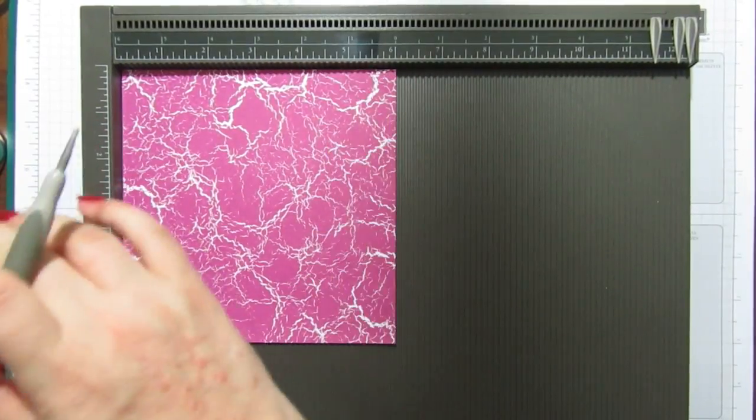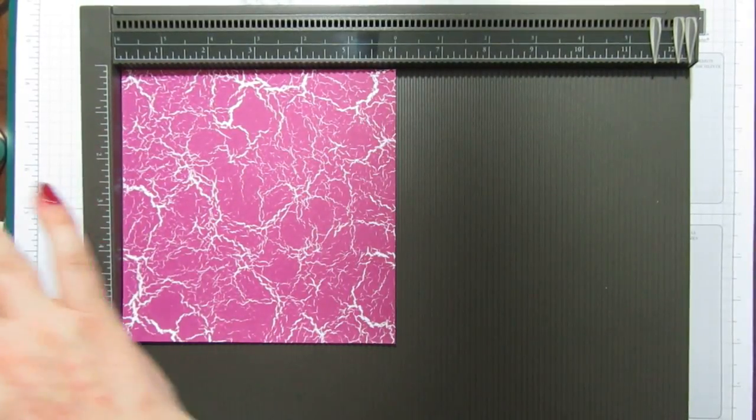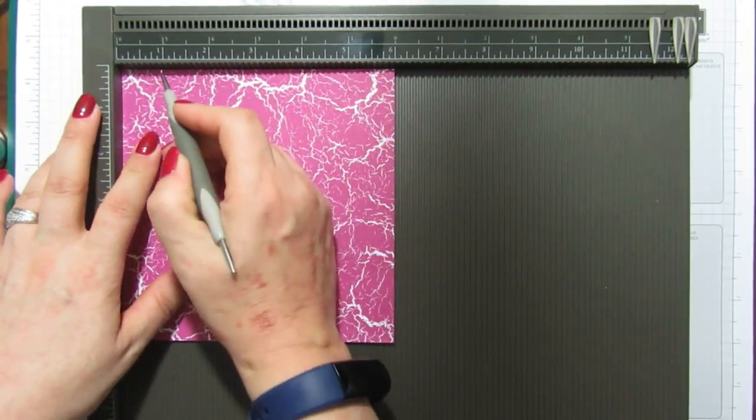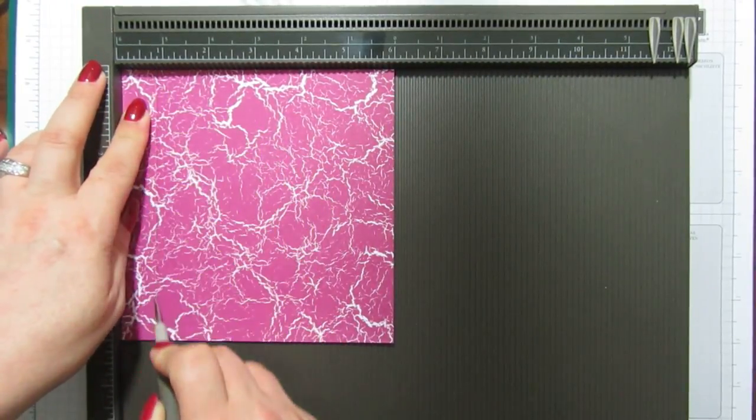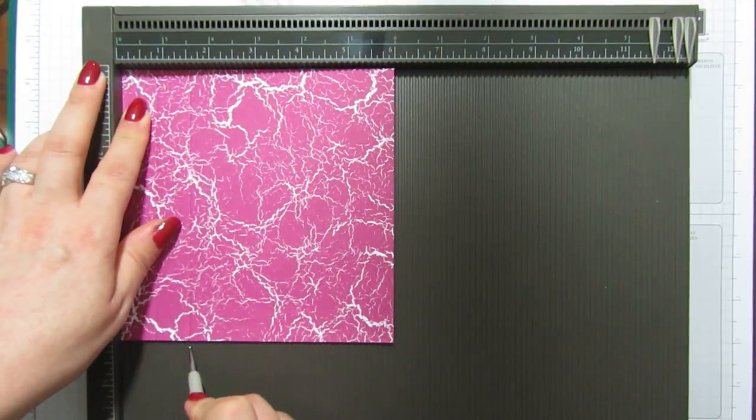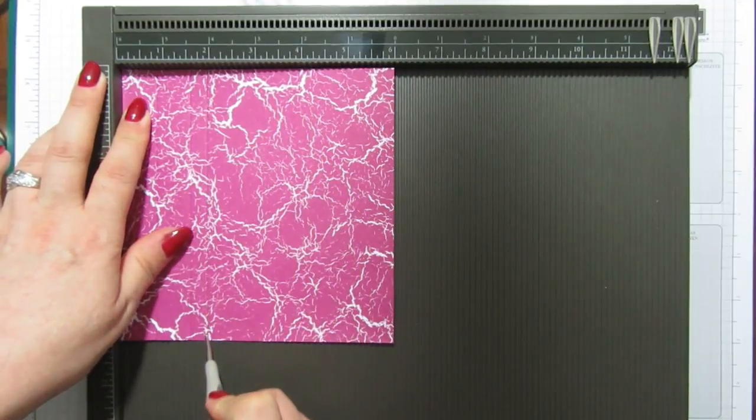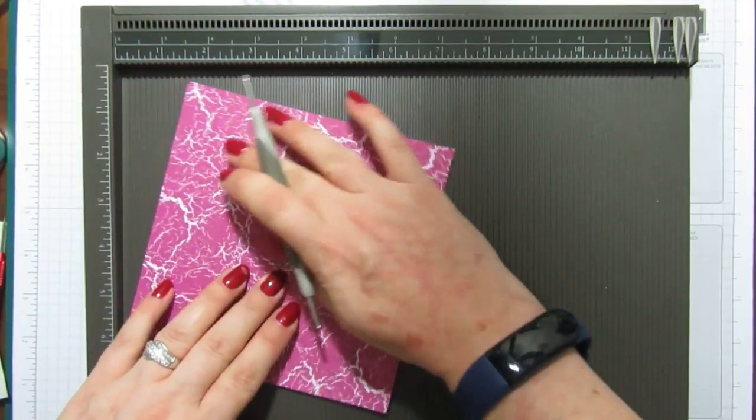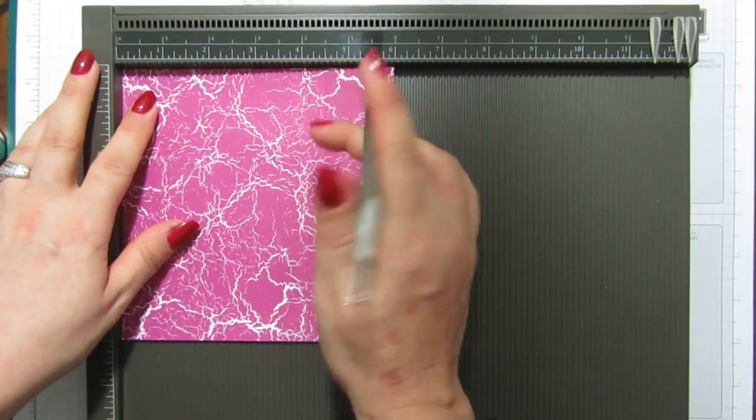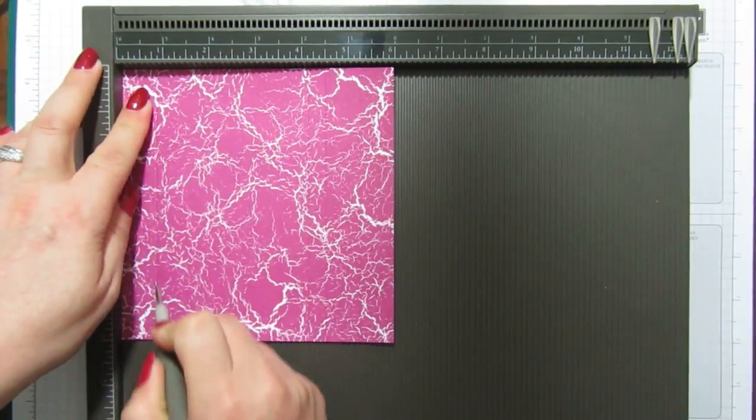Take your scoreboard and on any side, it doesn't matter which, you're going to score it at three quarters of an inch, one and a half inches, and one and seven eighths. Then you're going to turn it around and do the same on the opposite side.